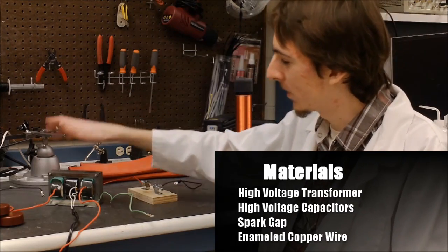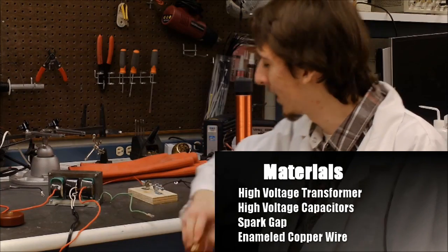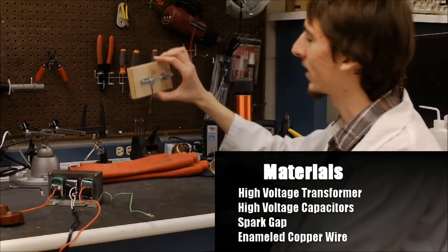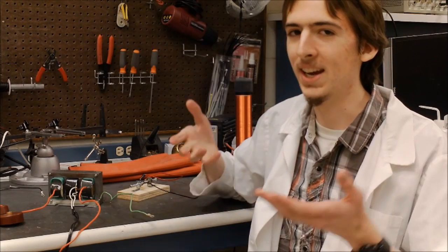It will require a high voltage transformer, some high voltage rated capacitors, and a spark gap. And of course, in order to actually make a Tesla coil, you need a coil.